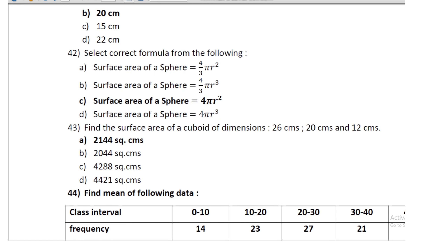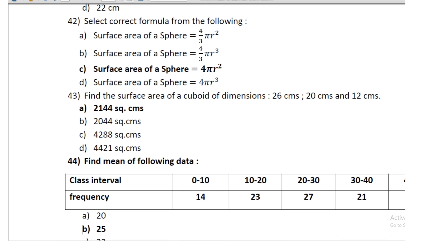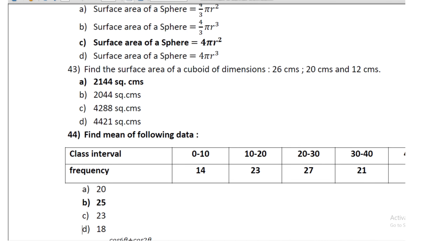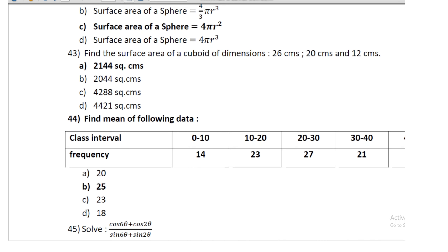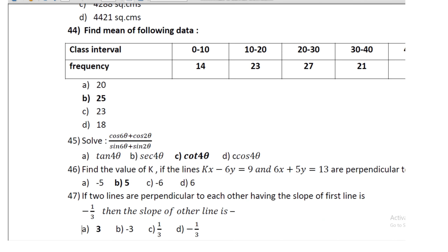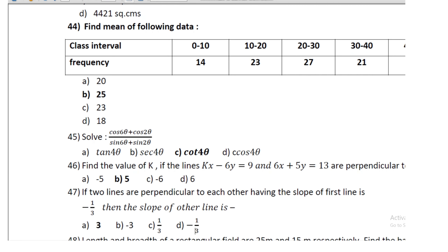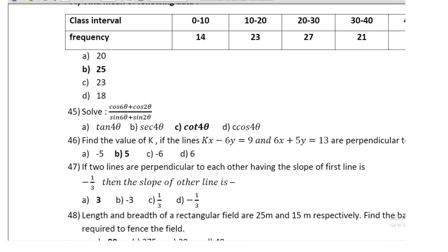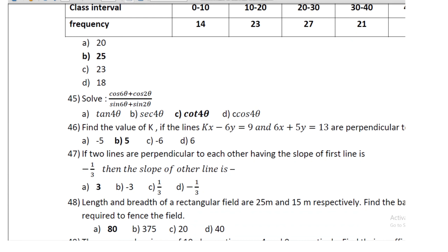Question 40: find the mean of the following data — class intervals and frequencies are given — the mean is 25. Question 41: solve cos 6θ + cos 2θ divided by sin 6θ + sin 2θ, which equals cot 4θ.